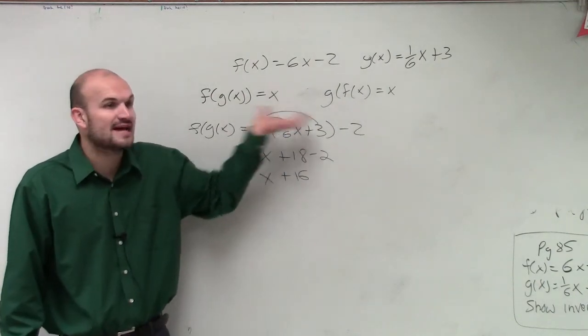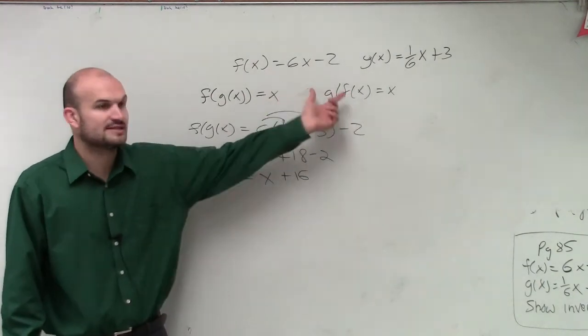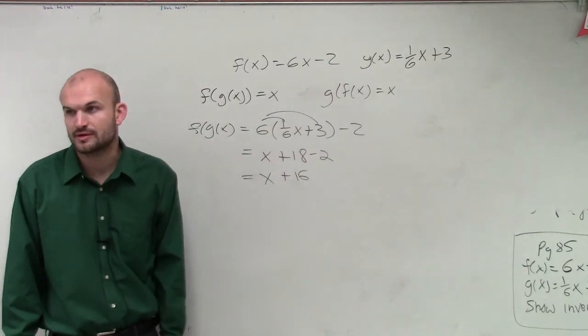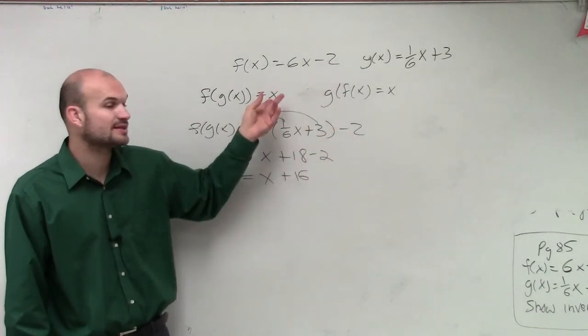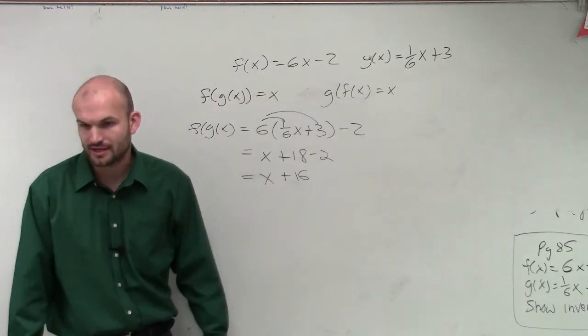Because obviously, it has to satisfy both of these statements for them to be inverses of each other. So by applying the composition, if you don't get the identity function, you know that you're not going to have inverses.